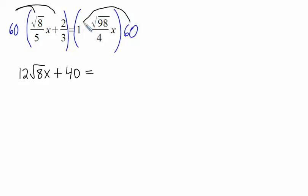So we have to distribute. 60 divided by 5 is 12. So this will be 12 radical 8x. Plus, 60 divided by 3 is 20. 20 times 2 is 40. Equals, distribute. 60 times 1, that was pretty simple, just 60. And then 60 divided by 4 is 15. Don't forget the minus sign. So it'll be minus 15 radical 98x.